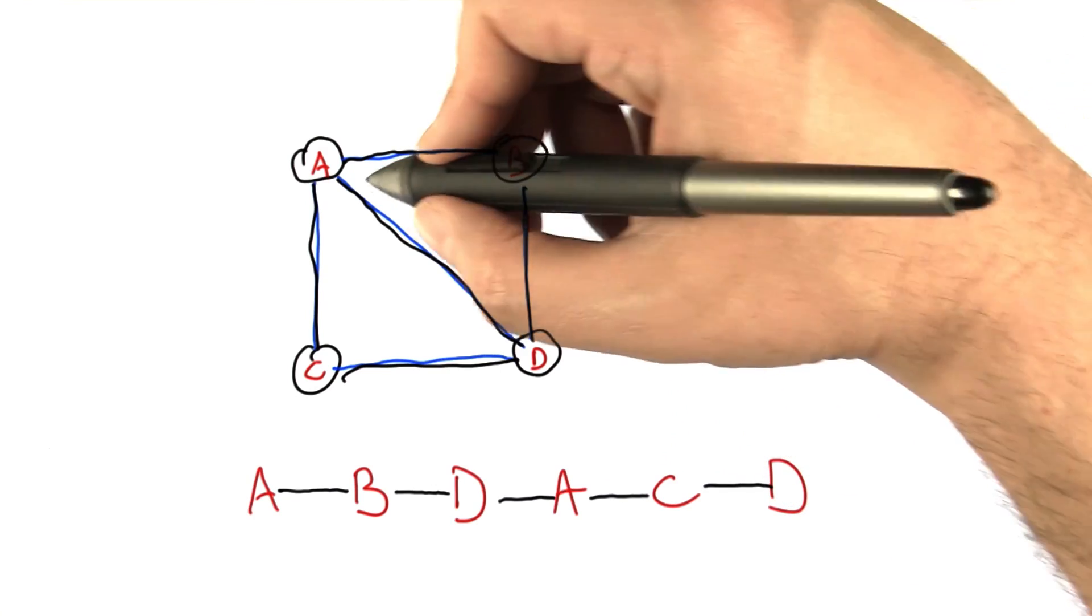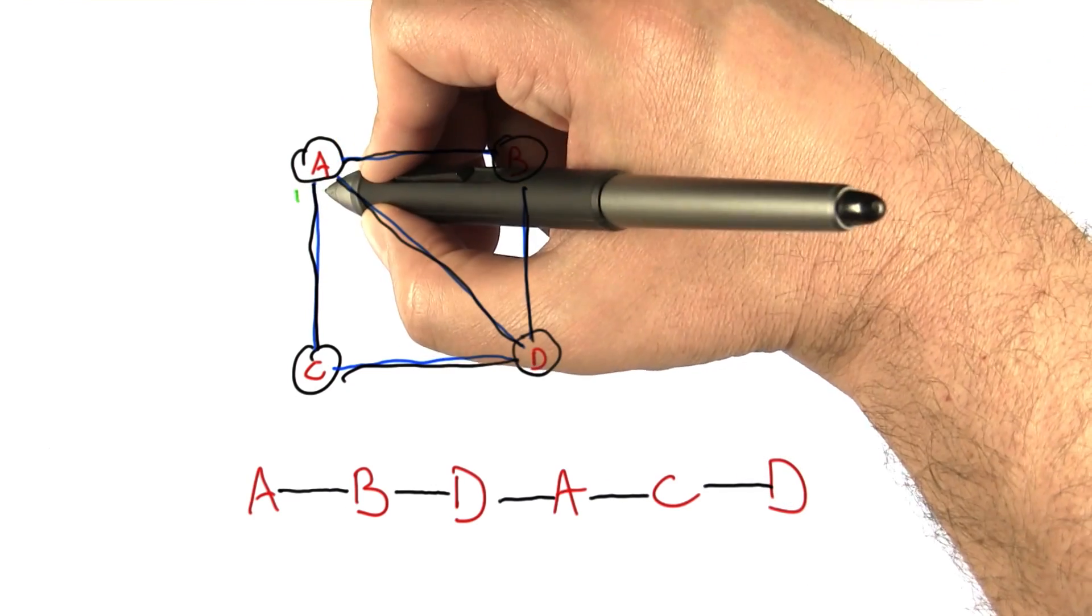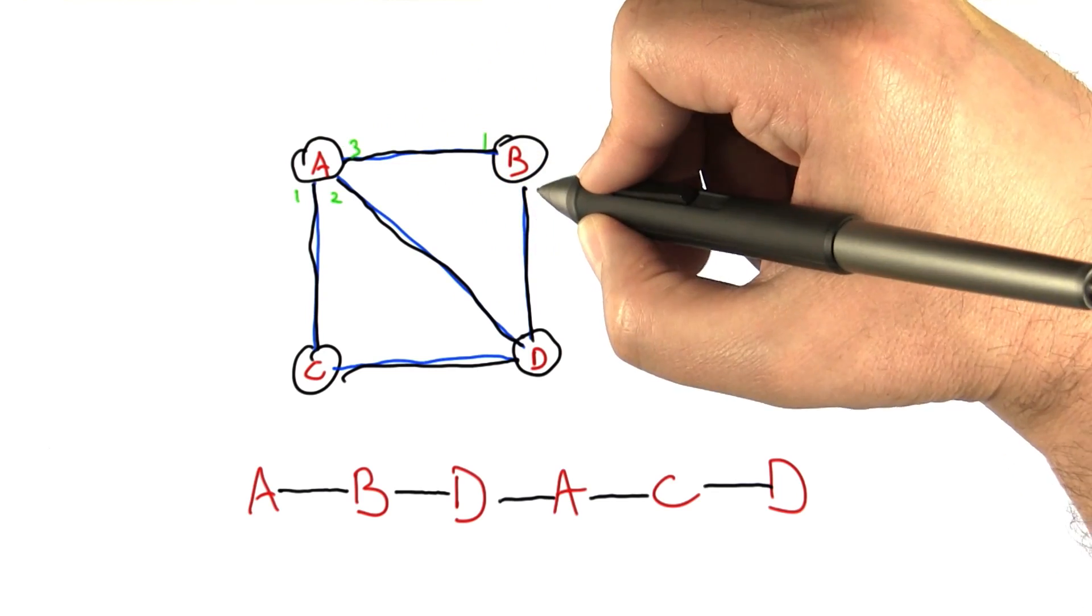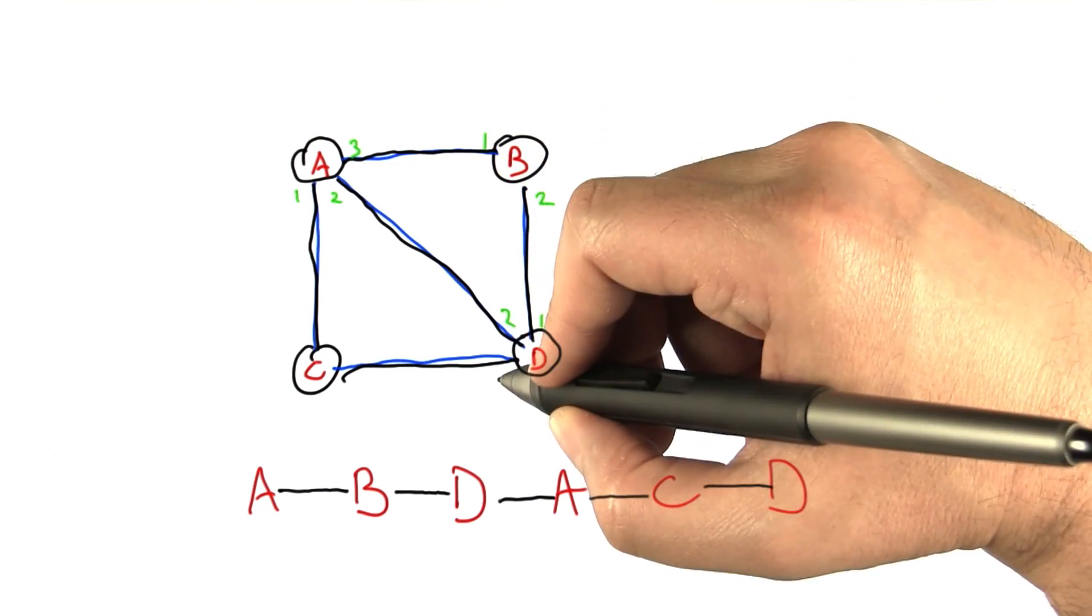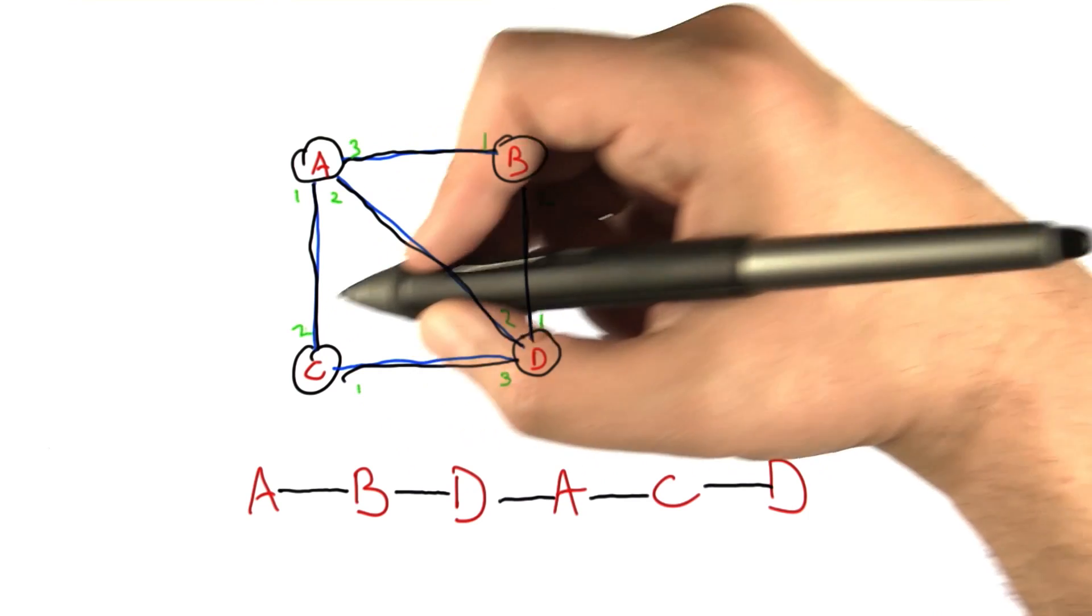So now let's consider the degree of all the nodes in the graph. So A has a degree of 3, B has a degree of 2, D has a degree of 3, and C has a degree of 2.